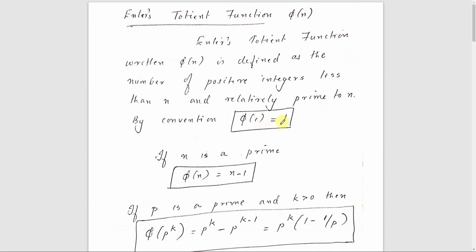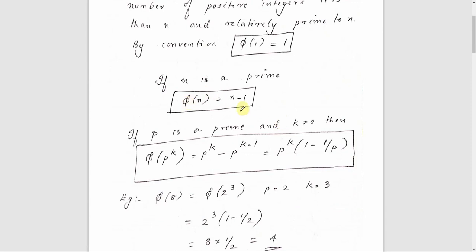phi of 1 is equal to 1. If n is a prime, there are three equations we will use. The first case is when n is a prime number. The second case involves n equal to p raised to k. The third case covers all prime factors in the product representation of n.